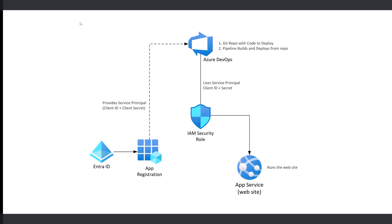First, let's review the deployed environment and talk about the changes we need to make to add continuous deployment that's triggered by the main branch merges.